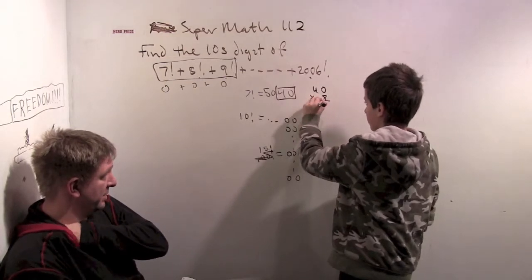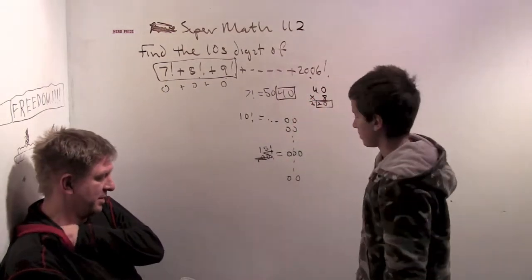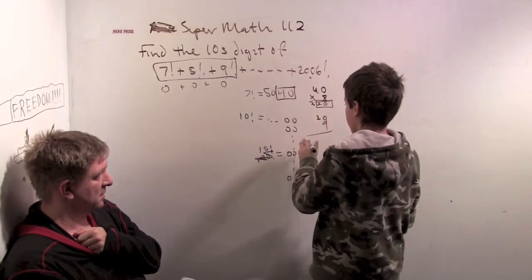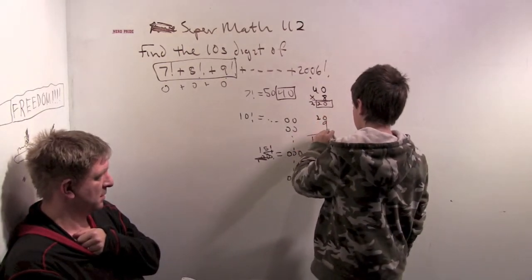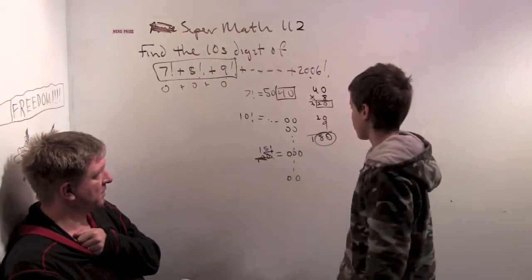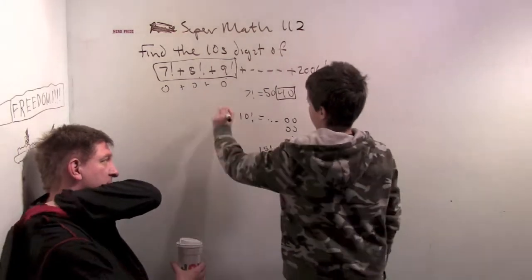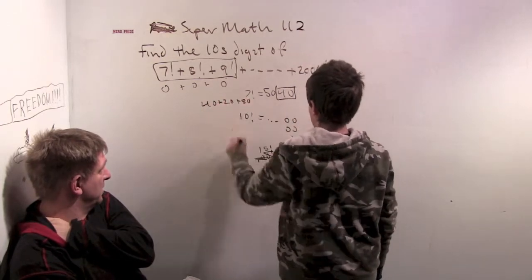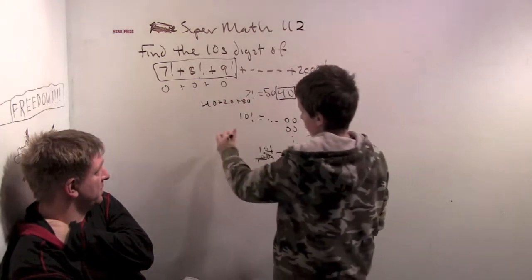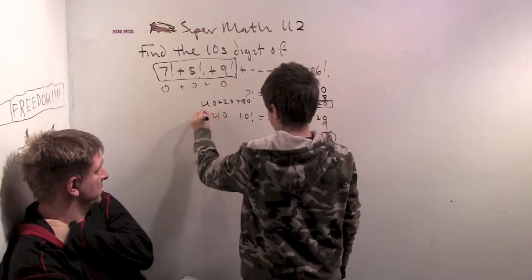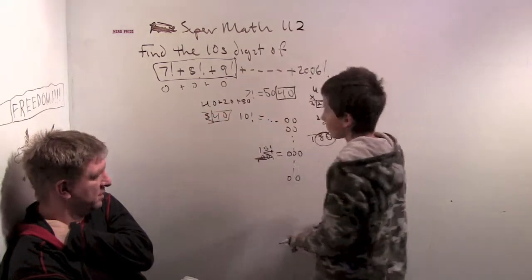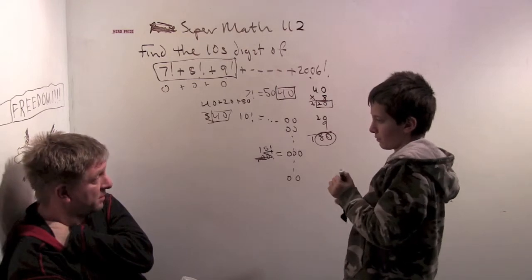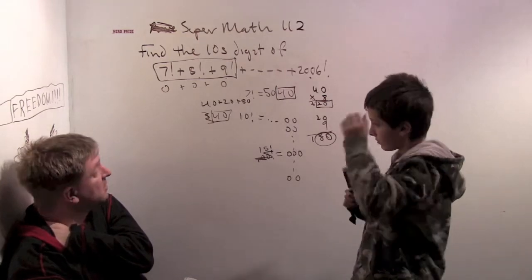Then you multiply it by 8 to get to eight factorial. So that would be 320, but you only need the last two digits, so 20. Then 20 times 9 is 180, but you get the 80. So what are we going to see for the tens digit? 40 plus 20 plus 80, which is 140, but you only need that part, the 40. So the tens digit of the sum is 4.